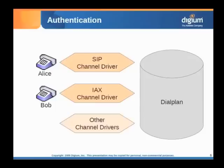From an architectural standpoint, when VoIP devices like SIP phones or IAX2 devices talk to Asterisk and call into the Asterisk dial plan, they always come through what we call a channel driver. The SIP channel driver speaks the SIP protocol to a SIP device — like Alice's phone in this example — and then translates that into the core of Asterisk. Alice's phone authenticates with the SIP channel driver, which then allows the call to pass on to the dial plan. You want to make sure that the accounts in the SIP channel driver configuration are strong.